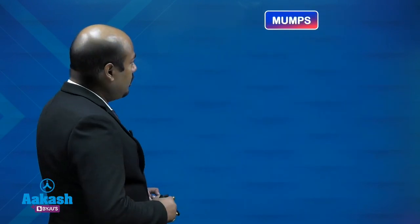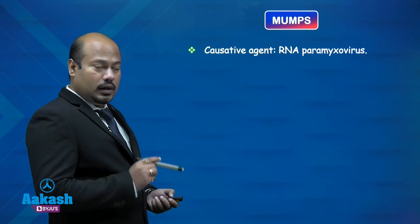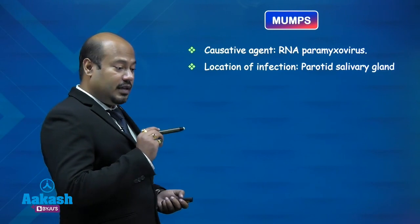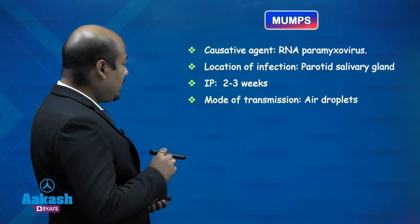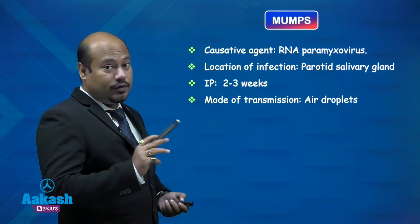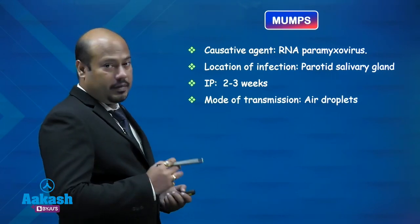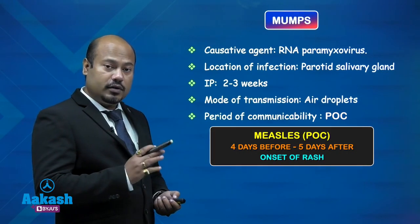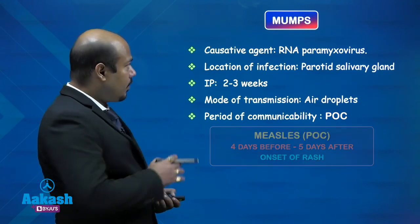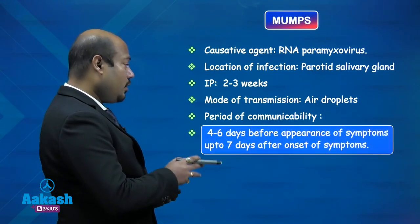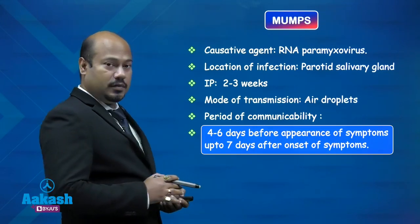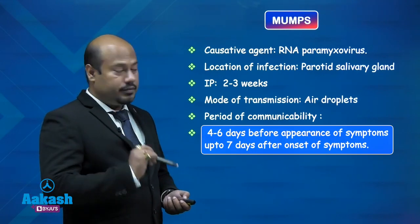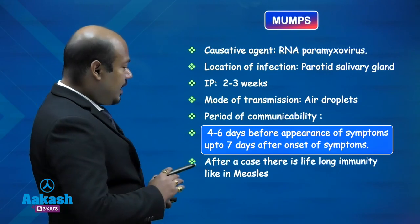Mumps: the causative agent is also an RNA paramyxovirus. The site of infection is the parotid salivary gland. Incubation period is two to three weeks. Mode of transmission is airborne. The period of communicability is four to six days before appearance of symptoms up to seven days after onset of symptoms. A single attack provides lifelong immunity, similar to measles.